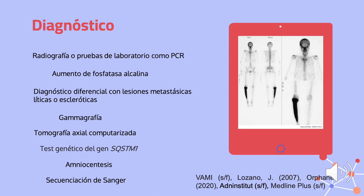La PCR o reacción en cadena de la polimerasa nos permite amplificar los exones de los genes para su posterior secuenciación, como la secuenciación de Sanger, que permite detectar una mutación concreta en un gen determinado. La amniocentesis, que es una prueba en la que se analiza una muestra de líquido amniótico de la madre, permite detectar mutaciones en los genes SQSTM1, TNFRSF11A y TNFRSF11B. Por último, el test genético del gen SQSTM1 se recomienda a todos los pacientes con enfermedad de Paget que tengan antecedentes familiares o sean un caso esporádico en su familia.